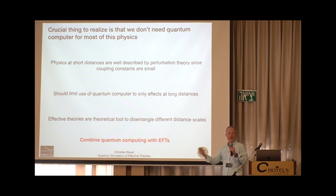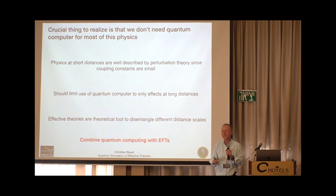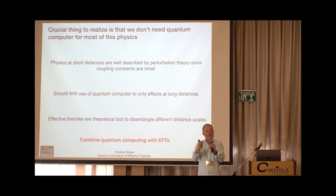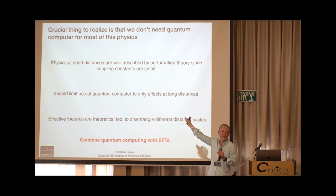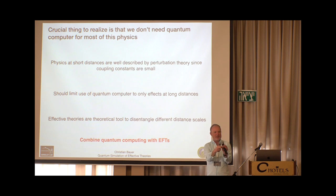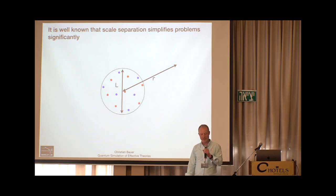We should only use our quantum computer for things a classical computer cannot do. The physics we can't simulate classically is the non-perturbative long-distance dynamics just around the 100 MeV range. Trying to simulate all the way up to 7 TeV is totally unnecessary since we can do perturbation theory there. We need to find a way to separate long-distance physics from short-distance physics — and this is really what effective field theories do.